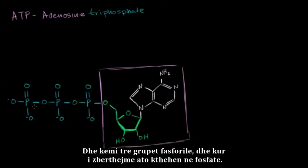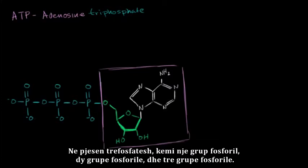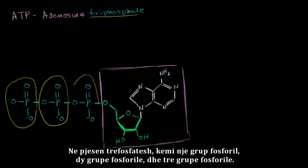And then you have three phosphoryl groups. And when they break off, they can turn into a phosphate. And so the triphosphate part, you have, so triphosphate, you have one phosphoryl group, two phosphoryl groups, and three phosphoryl groups.